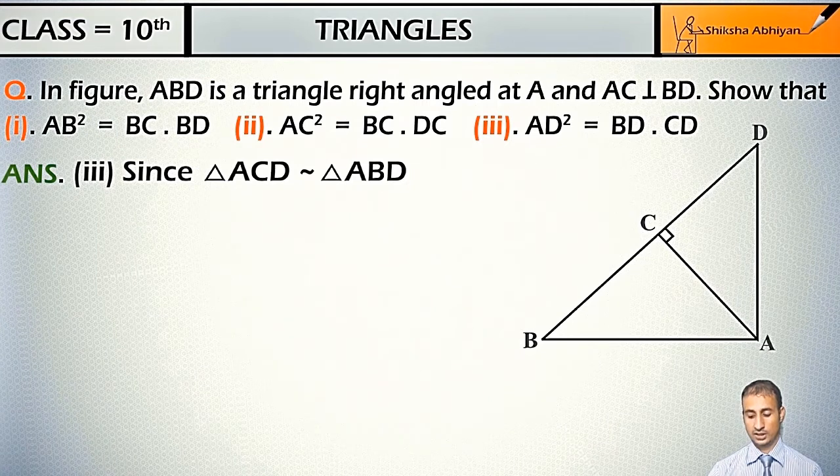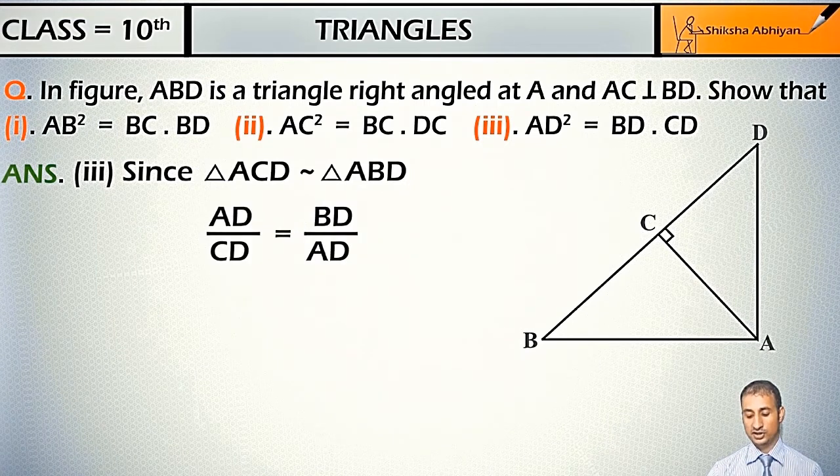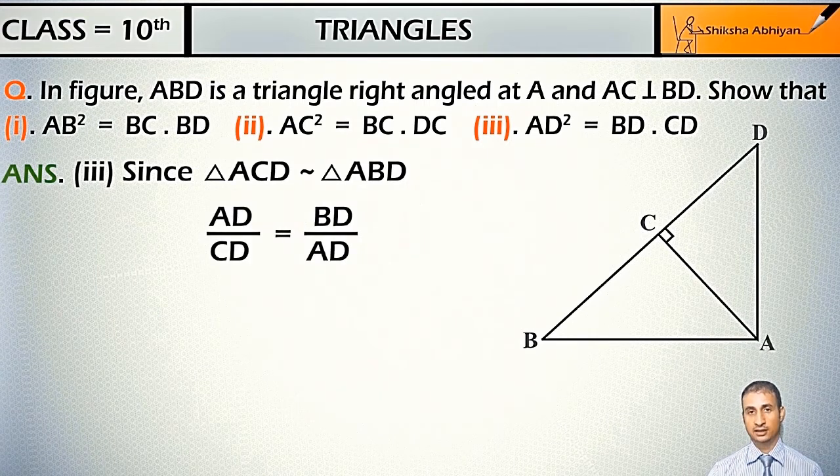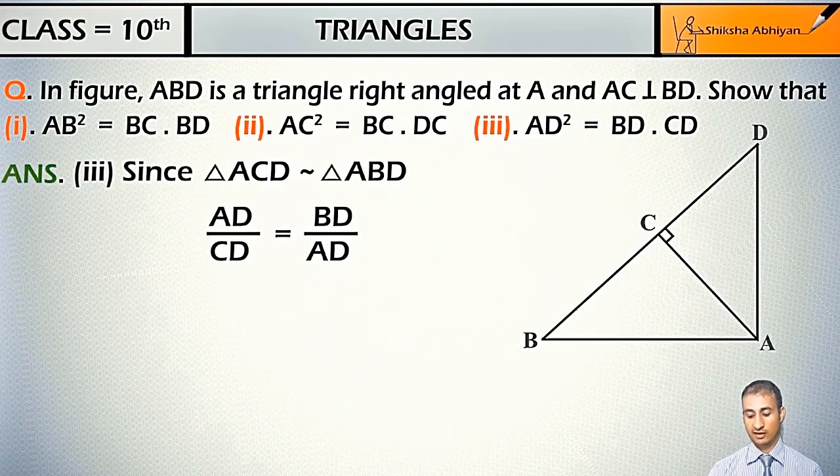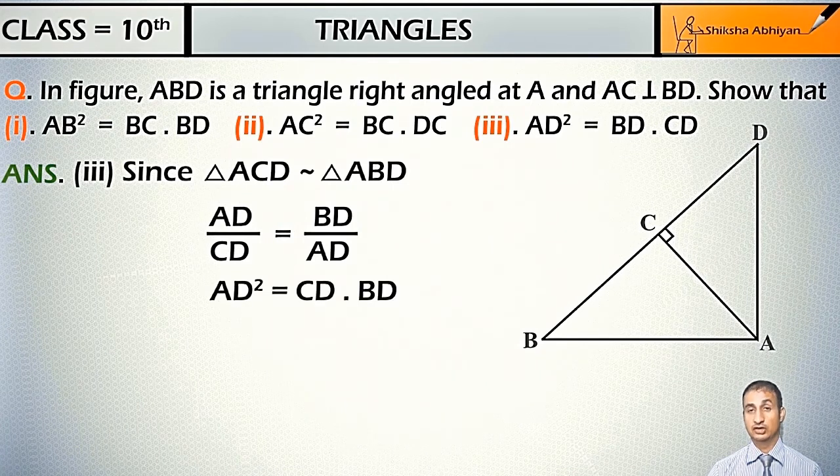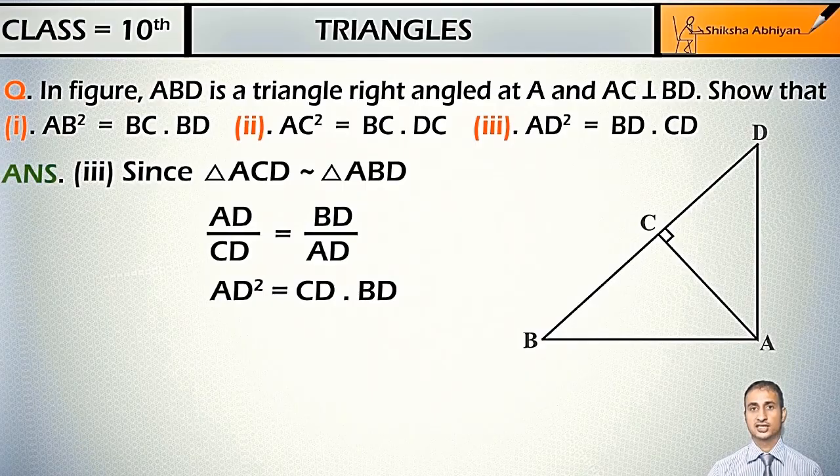So I can write AD upon CD is equal to BD upon AD. Cross multiply and I will get AD² = CD·BD. Move to the next question.